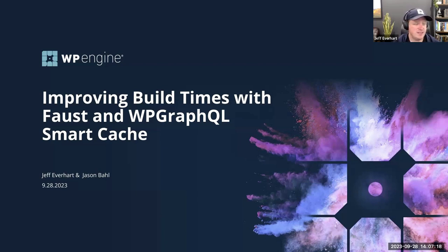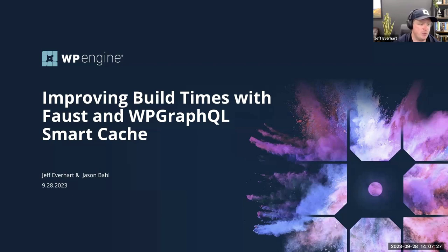Today we're going to talk about how you can use Faust and an extension called WP GraphQL Smart Cache to improve your build times.